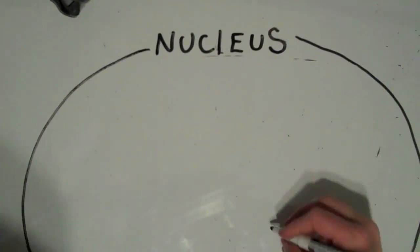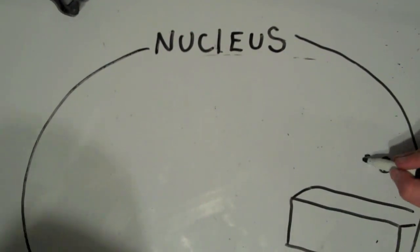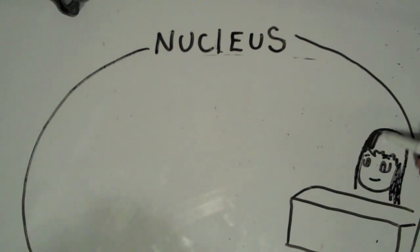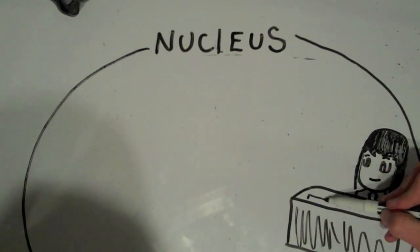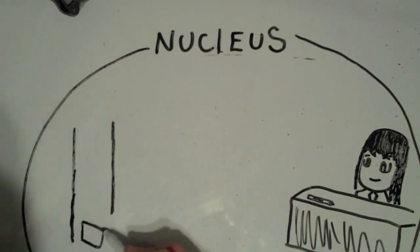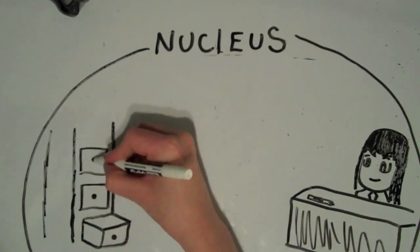Now see that main office? It controls anything and everything in the school, just like a nucleus controls the cell. The main office also holds all the school's important information, like a nucleus holds the cell's DNA.